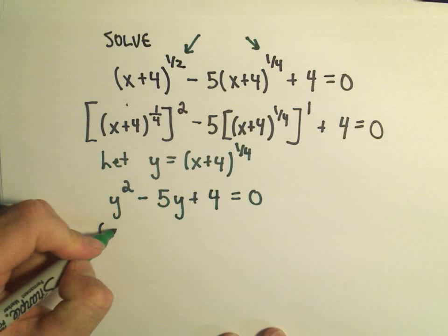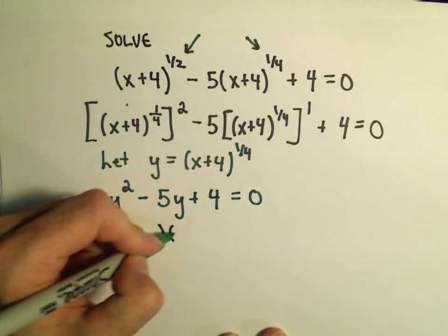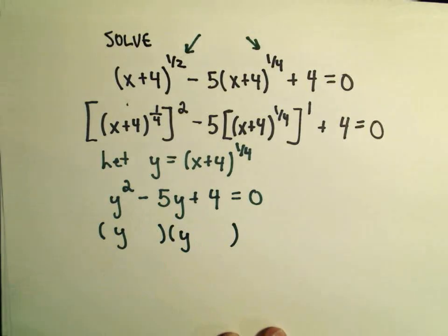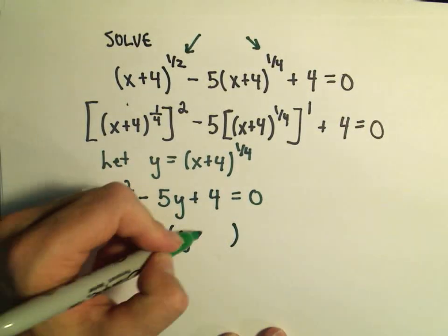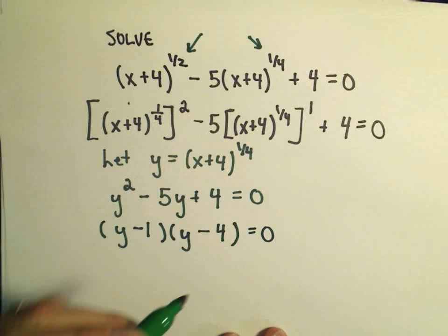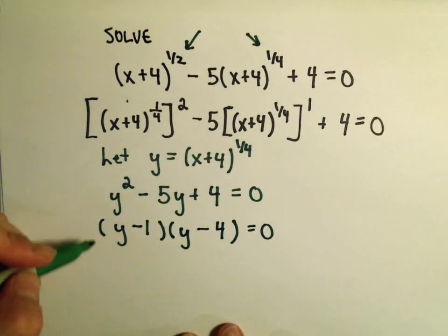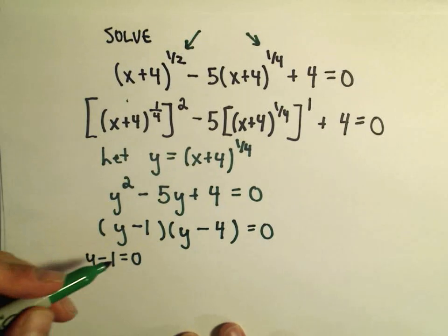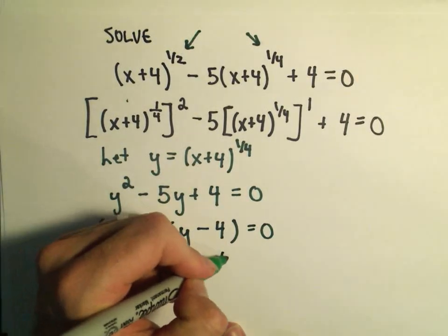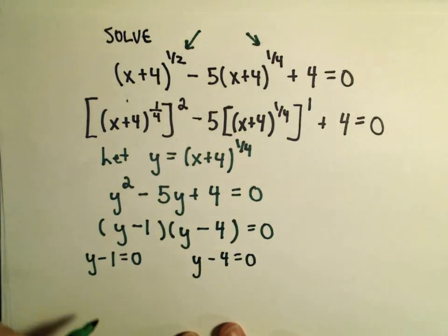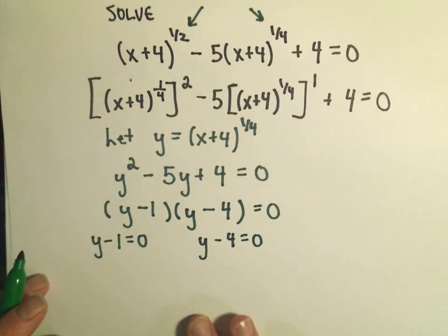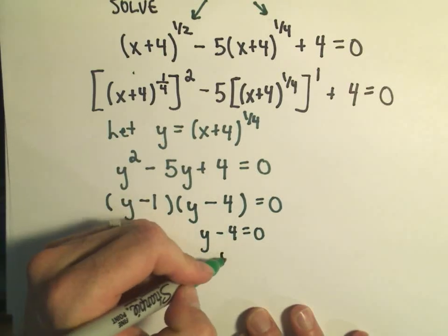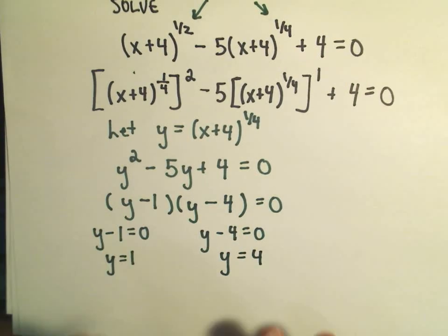So, again, I think this one will factor relatively nicely. So we need two numbers that multiply to positive four, but add up to negative five. I think negative one and negative four, that would work for us. So, again, we set each factor equal to zero. So y minus one equals zero, y minus four equals zero. In the first part, I can add one to both sides, and that'll give me y equals one. On the second part, if I add four to both sides, I'll get y equals four.